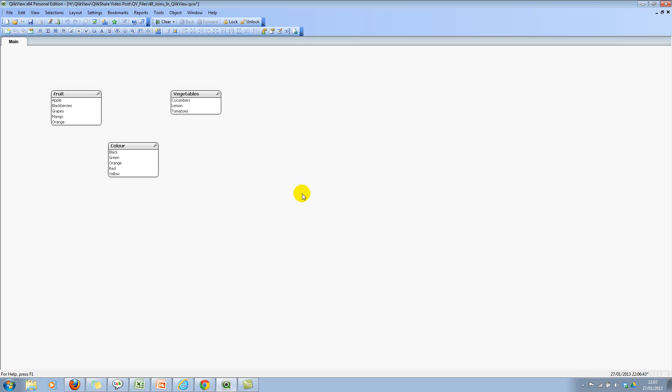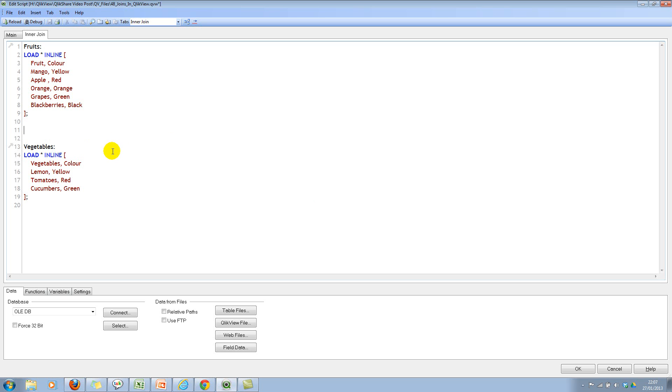Your practical example will be generally much more complicated, but I wanted to keep it simple and easy to gain the understanding. Let's go to the script editor and here I will say inner join. Then you don't have to specify the table name, but it's always a good practice.